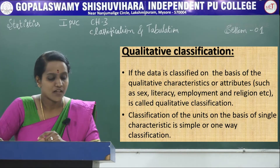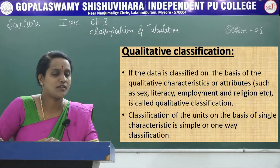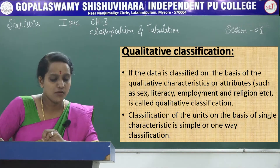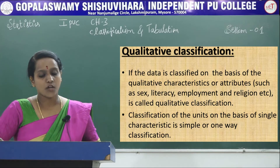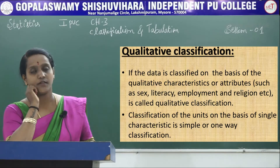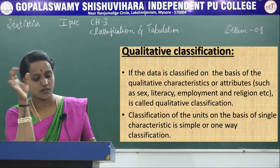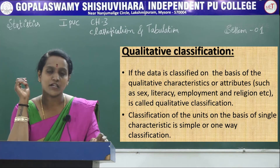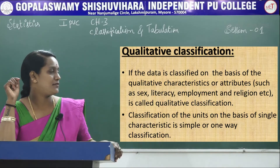Qualitative classification: if data is classified on the basis of qualitative characteristics or attributes — such as sex, literacy, employment, and religion — it is called qualitative classification. Classification of units on the basis of a single characteristic is called simple or one-way classification. For example, if we consider religion, there are different religions; if we consider literacy, it is literate or illiterate. Considering only a single characteristic gives us simple or one-way classification.